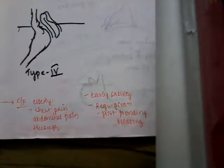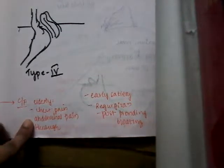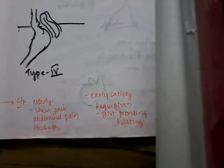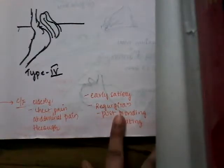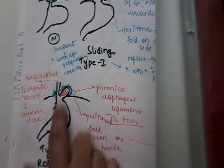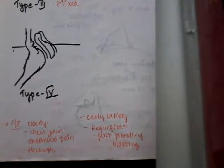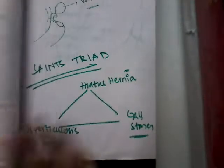The clinical features of rolling type hiatus hernia include chest pain, abdominal pain, hiccups, and early satiety. Early satiety occurs because most of the fundus is displaced, leaving little space in the stomach. Regurgitation and postprandial bloating are also commonly seen.